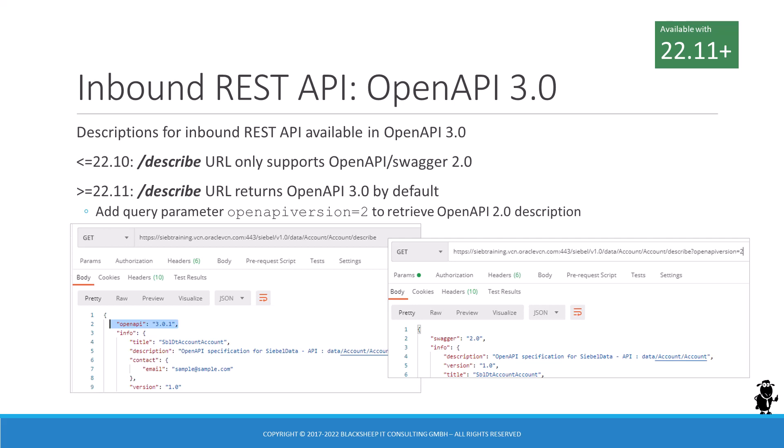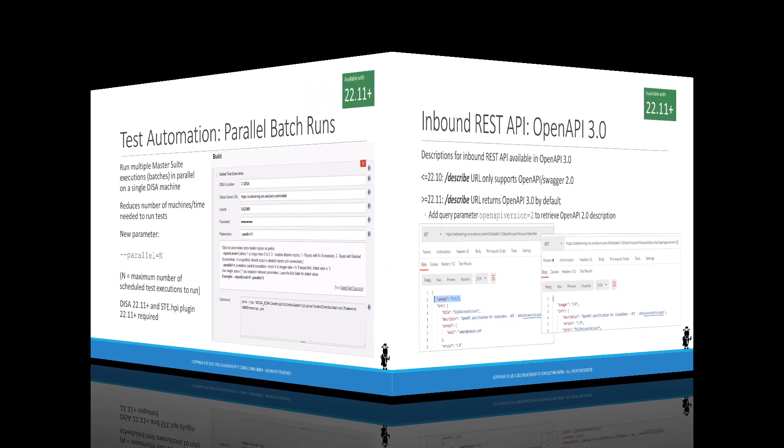To get the descriptions, simply use the slash describe parameter as usual. Siebel 22.11 and higher will return an OpenAPI 3.0 description by default. If you wish to obtain the prior Swagger 2.0 format, you now have to add a query parameter named OpenAPI version with a value of 2.